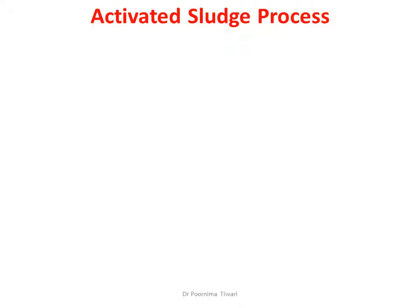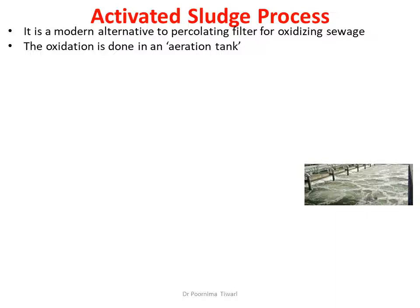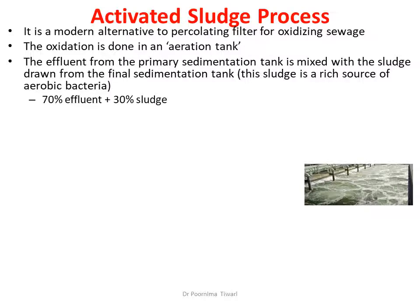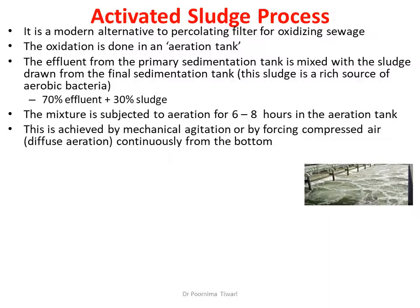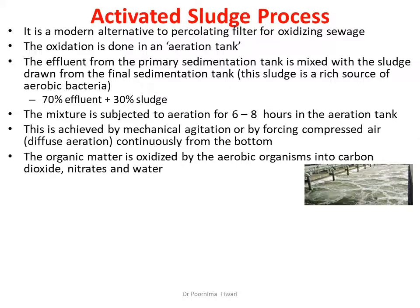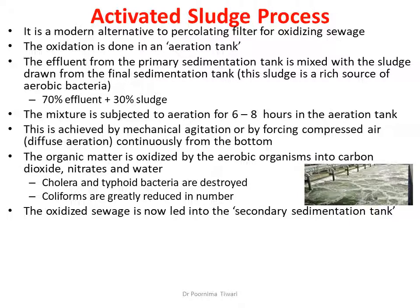The activated sludge process is the modern alternative to percolating filters for aerobically oxidizing sewage. Oxidation is done in an aeration tank. The effluent from the primary sedimentation tank is mixed in a 70:30 proportion with sludge drawn from the final sedimentation tank, which is a rich source of aerobic bacteria. The mixture is then subjected to aeration for 6–8 hours within the aeration tank, achieved by mechanical agitation or by forcing compressed air from the bottom. The organic matter is completely oxidized by aerobic organisms into carbon dioxide, nitrates, and water. Harmful bacteria are destroyed and coliform bacteria are greatly reduced. The oxidized sewage is led into the secondary sedimentation tank.